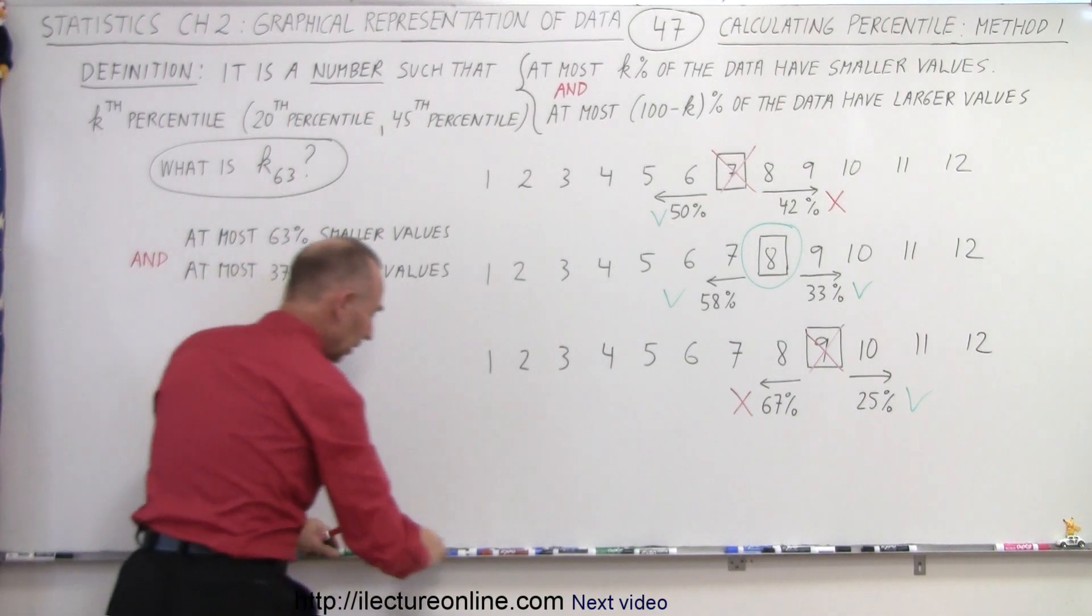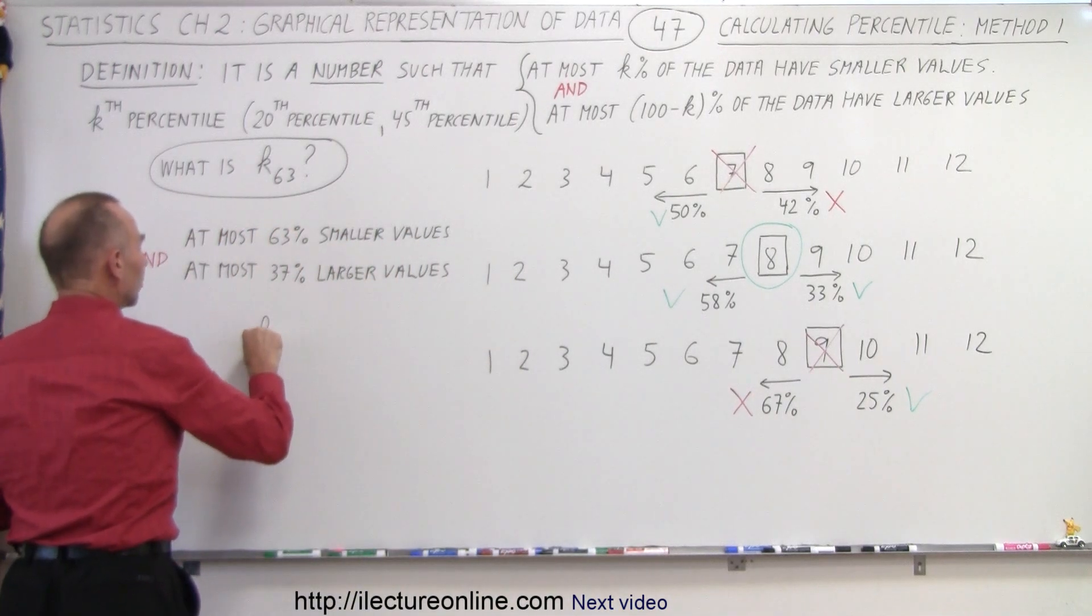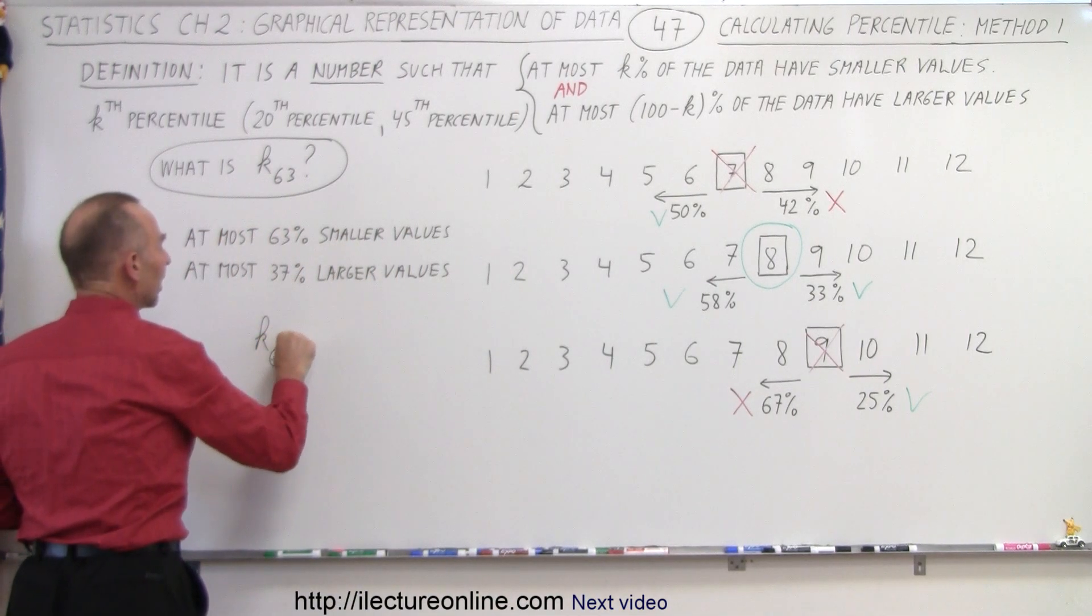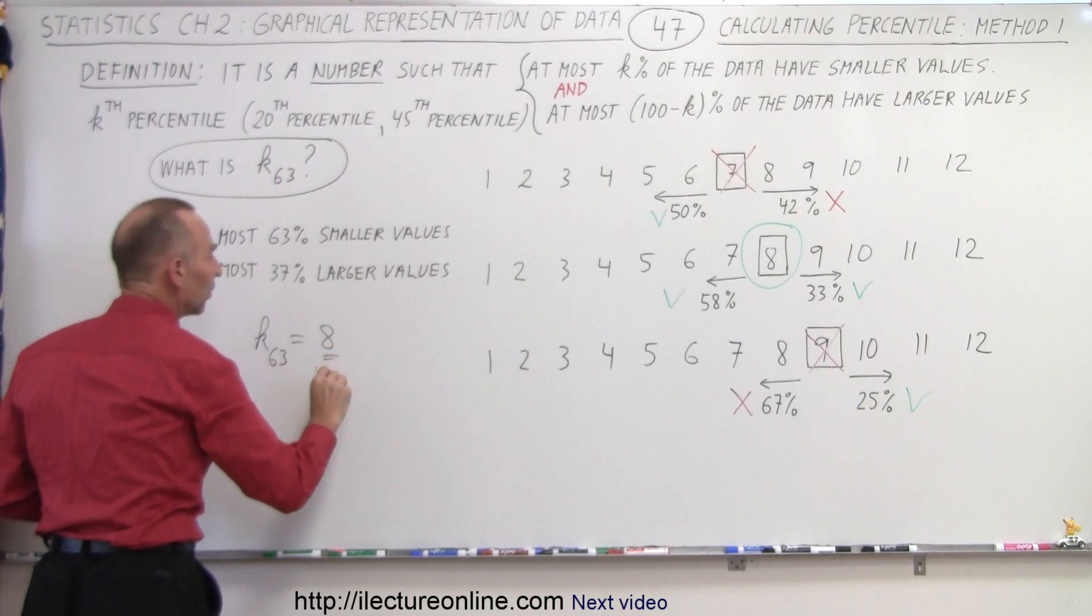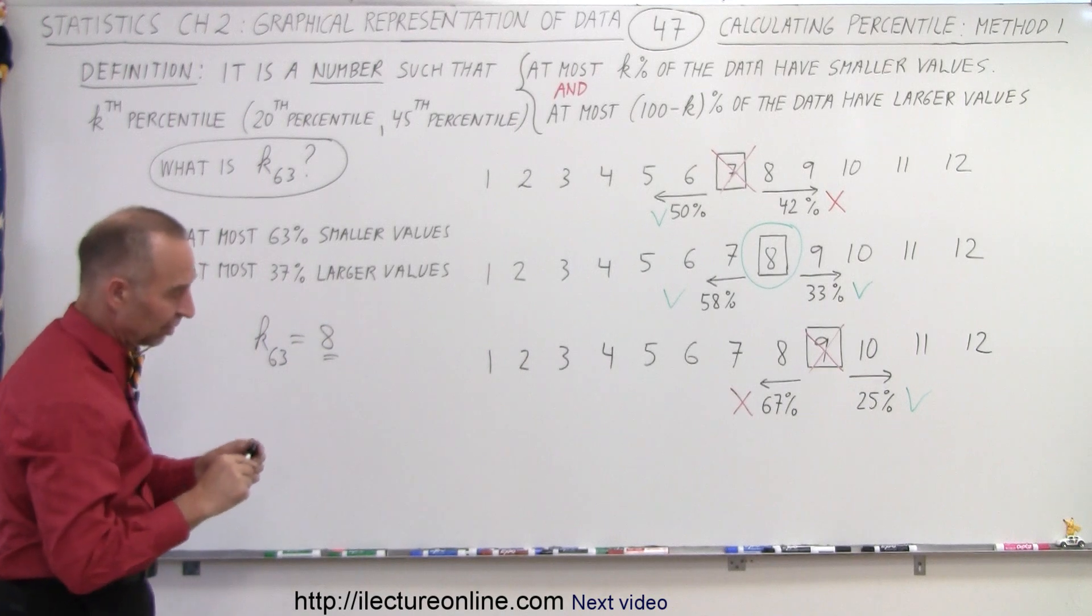Remember, it represents a number, a data point, not a position. Now, of course, in this particular case, I have the same positions as the data points, just to make it easy. But this is indeed the value of the data that represents the 63rd percentile.